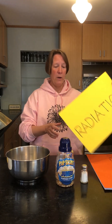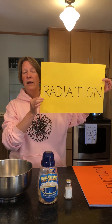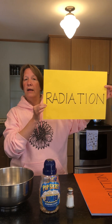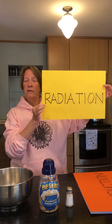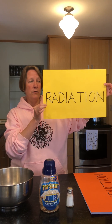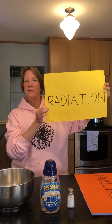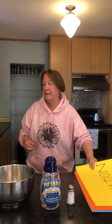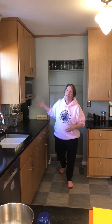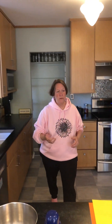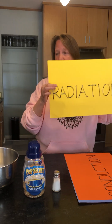Heat can transfer in three different ways. First: radiation. Radiation is anything that's an electromagnetic wave — it's energy that's transferred in waves. It doesn't have to have contact, and an example in my kitchen would be the microwave oven. Microwaves are an electromagnetic wave, so that's radiation.